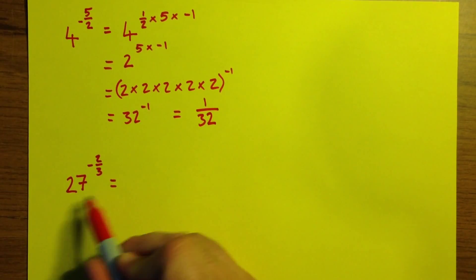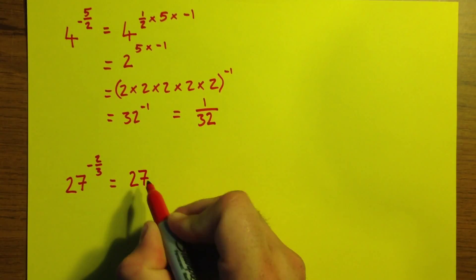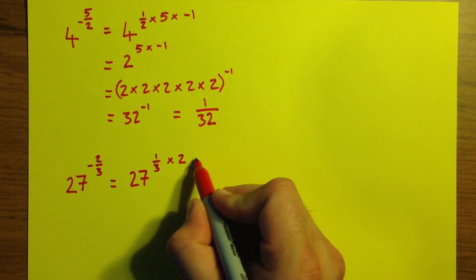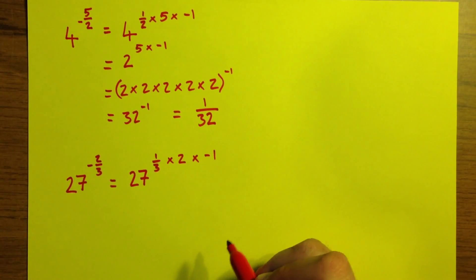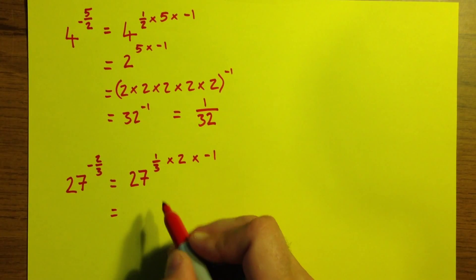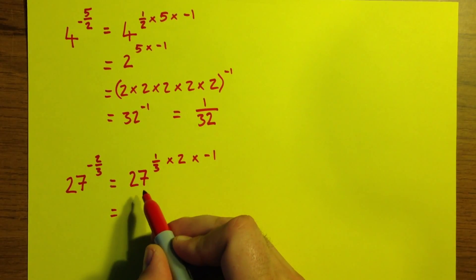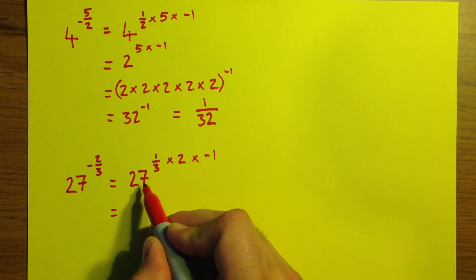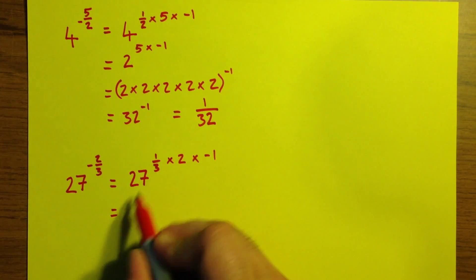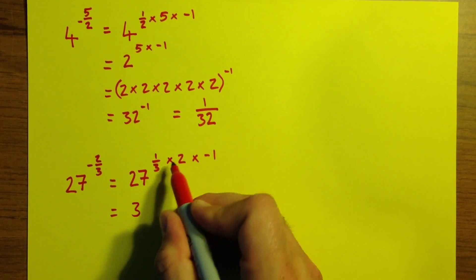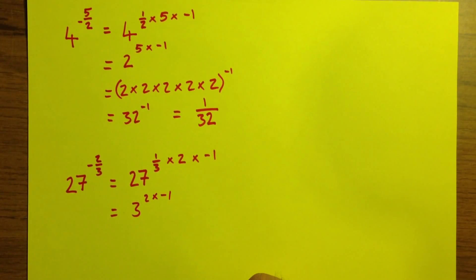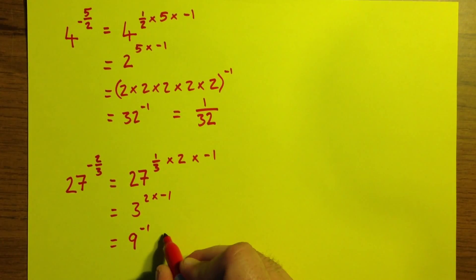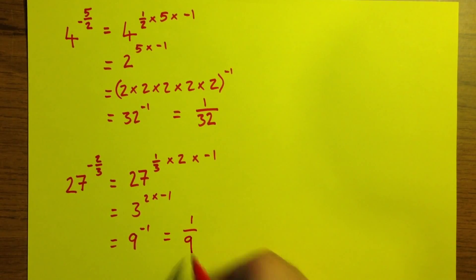Using the same method for the next question, I'll rewrite it taking the third out first, then the 2, and then the negative 1. So 27 to the power of a third means the cube root of 27 — what 3 numbers multiply together to make 27? That would be 3 times 3, which is 9, times 3 is 27. So 27 to the third is 3. We've still got the power of 2 and the negative 1 — 3 squared is 9, to the negative 1, which gives us a final answer of 1 over 9.